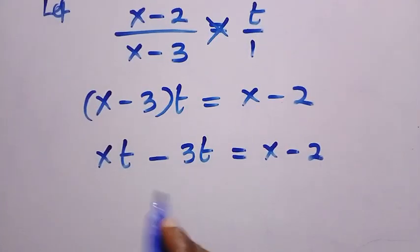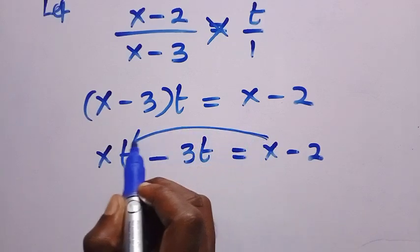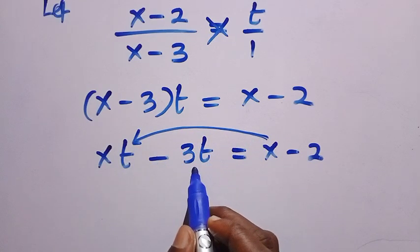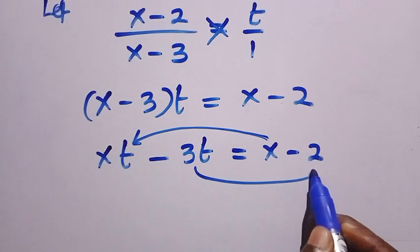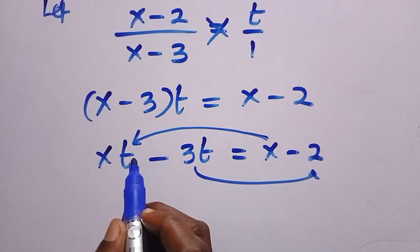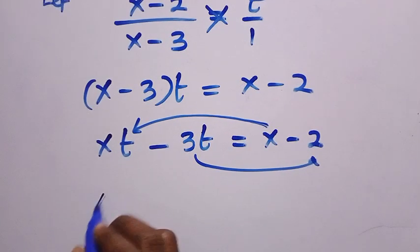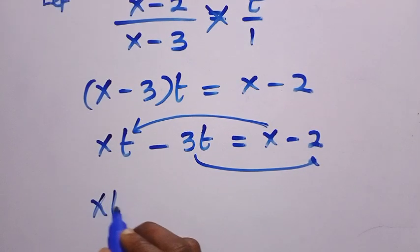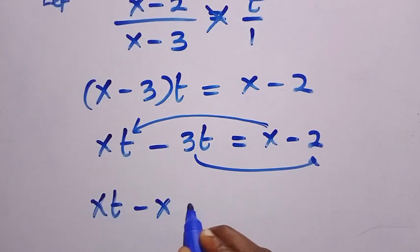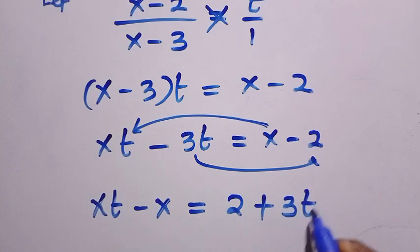We make x the subject of the formula. When x comes to the other side it becomes negative, and when minus 3 crosses over it becomes positive. So therefore, we have xt minus x equals 2 plus 3t.